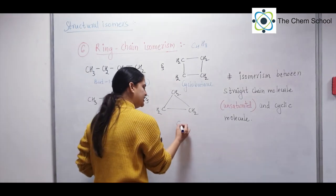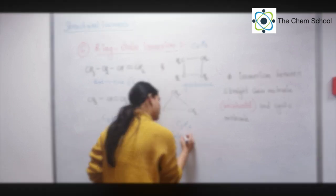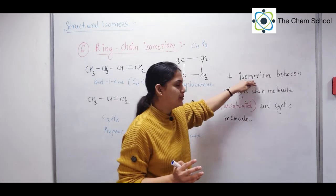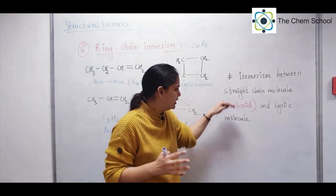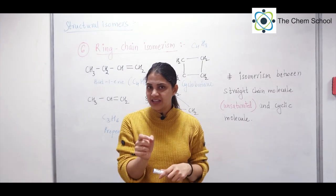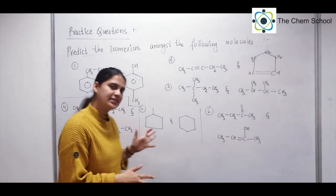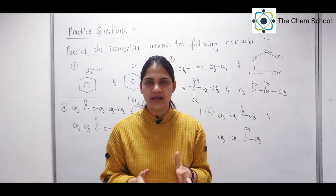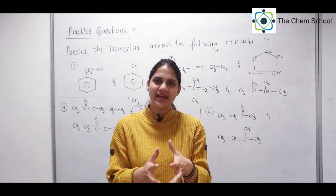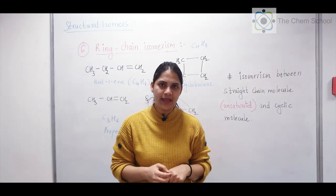You also have propene — C3H6 — and cyclopropane — three carbons in a ring, also C3H6. This is a cyclic molecule and that is a straight chain. Generally in ring-chain isomerism, the straight-chain molecule is unsaturated and the other is the cyclic molecule. I will give you some practice questions and the solutions in the next class. Apart from that, for structural isomerism I will give you some tips and tricks in another video, so do watch it. Thank you, see you soon in the next one.